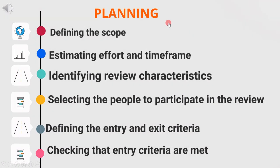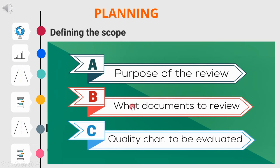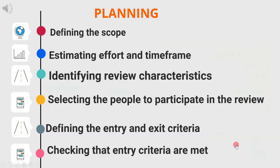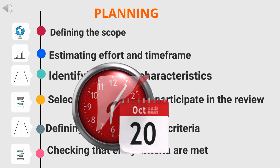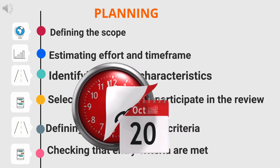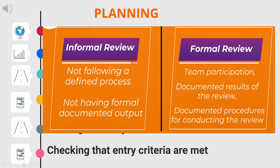First, we will explain the planning activity. During planning, we define the scope of review — for example, the purpose of the review, what documents to review, and the quality characteristics to be evaluated. Next, we estimate effort and timeframe — the complete effort required and when the review will start and end. Third is identifying review characteristics: we decide whether to go for informal or formal review type, and what points to collect for documentation after analyzing the product.